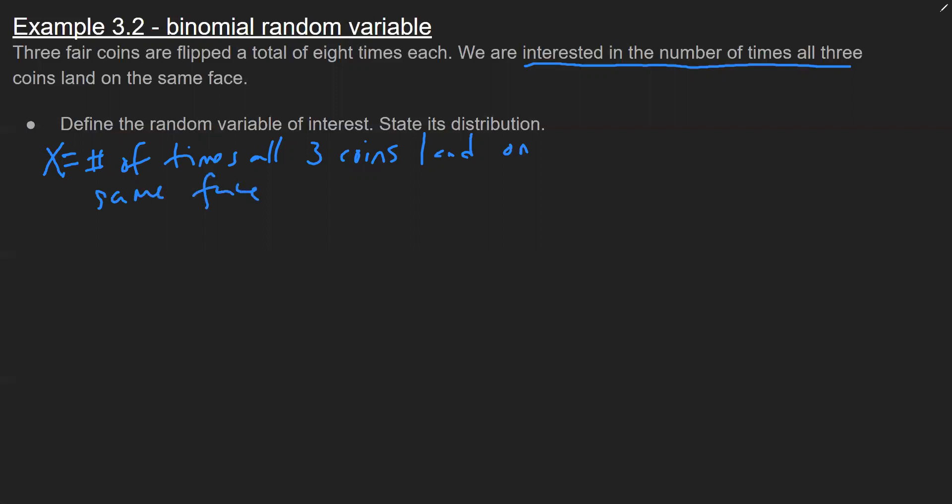Sometimes it's helpful to identify what are the possible values. If I'm flipping all three coins eight times, I potentially have a maximum of eight times where they all match or a minimum of zero, so it'd be all the integers from zero to eight.